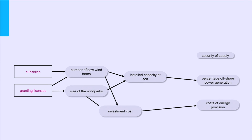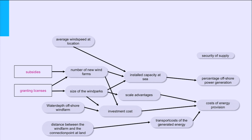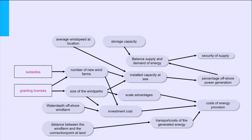This is a nice basis which we will detail further. The investment costs are an important factor. At sea, water depth is a very important cost factor. Transport costs of the generated energy are also important, influenced by the distance between wind farms and the connection points at land. Costs are also influenced by scale — the bigger the project, the more scale advantages. Capacity is not only determined by the number and size of the wind farms, but also by the average wind speed at location. As for security of energy supply, wind doesn't always blow, so there needs to be a dynamic balance between supply and demand. Storage capacity and the number of international connections might be factors here.